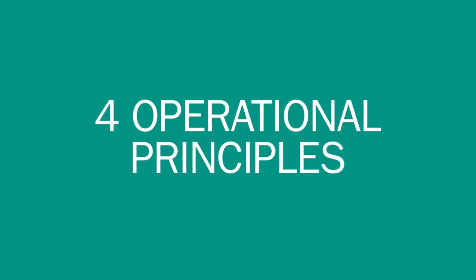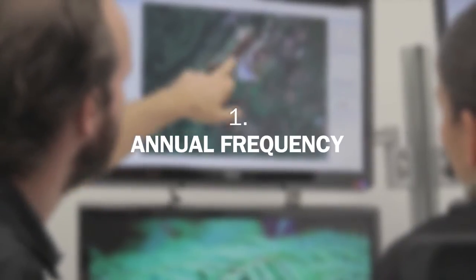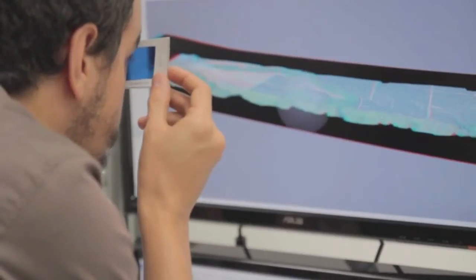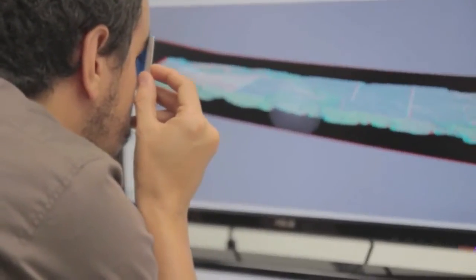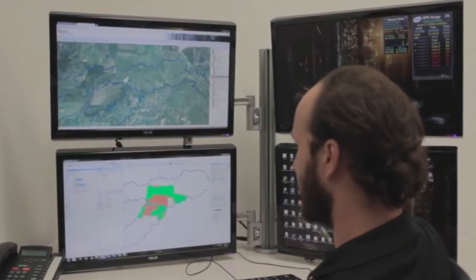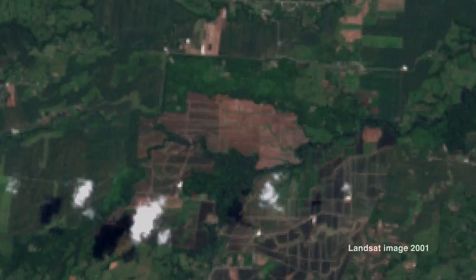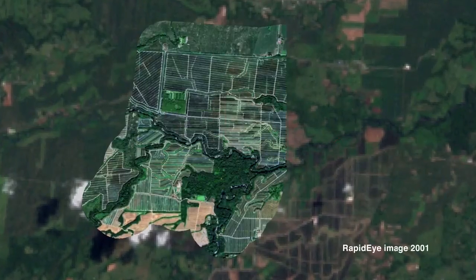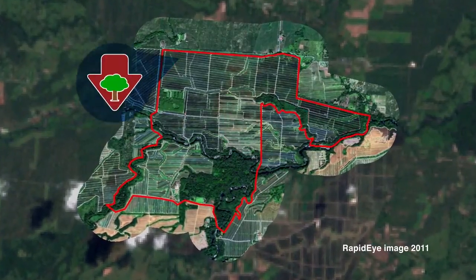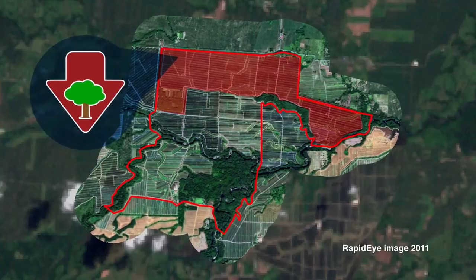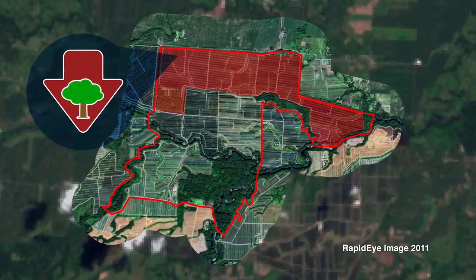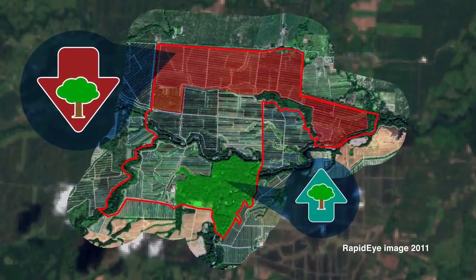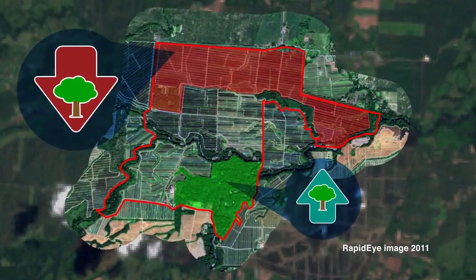The system is based on four operational principles. First, the annual frequency. Every year, images of productive landscapes in Costa Rica suffering from agricultural expansion into natural habitat are processed. The result is an image that shows polygons of the area where a potential environmental infringement or an increase in vegetation cover has been identified during that year.